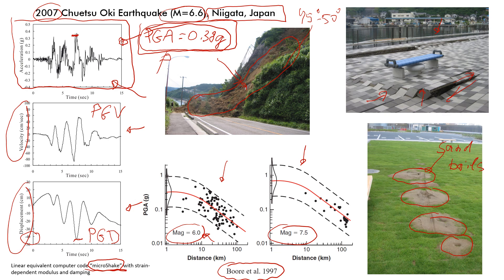We know that peak ground acceleration was 0.38 g's, so somewhere around 0.23 to 0.38 — somewhere here. We need to follow this trend, and we said 50 kilometers away — so 20, 30, 40, 50 — so I believe it should be somewhere here.